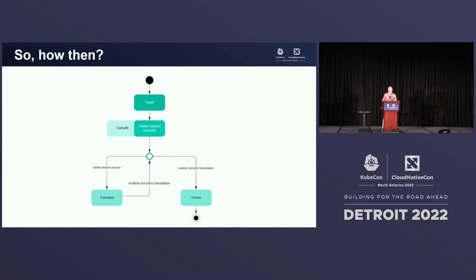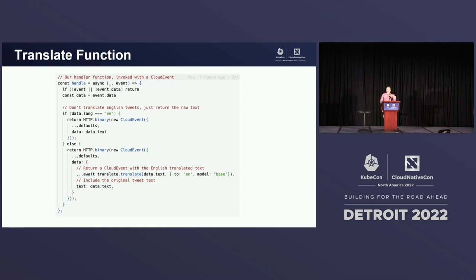First of all, there's a Camel K Camlet. That's going to serve as our event source. It makes polling requests to the Twitter API, the search API, converts those results into cloud events, and sends those cloud events directly to the Knative event broker — that's the little hollow diamond you see there in the middle. That event broker has a couple of triggers associated with it. One of them sends cloud events to a translate function, which uses the Google Translate API to translate the tweet if it's not in English. It returns a new cloud event to the event broker with a new type. That new type triggers another function called a viewer function, which prints that tweet — the cloud event of the tweet — to the screen so that we can see everything working.